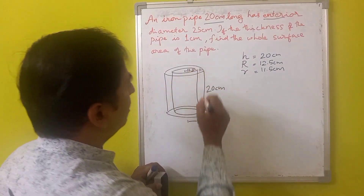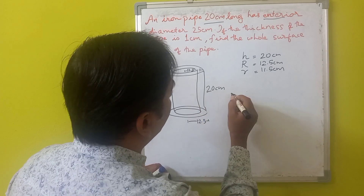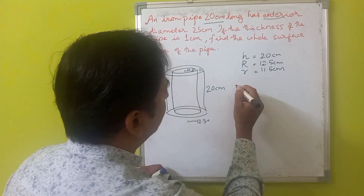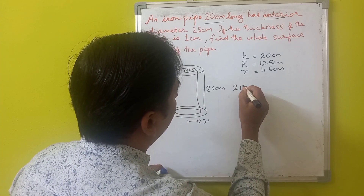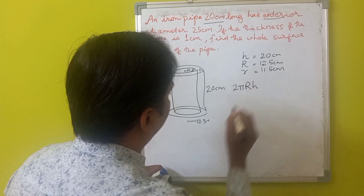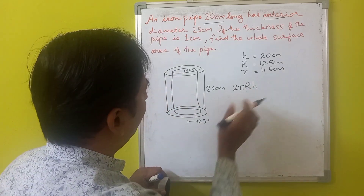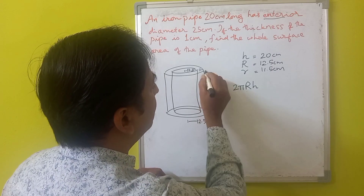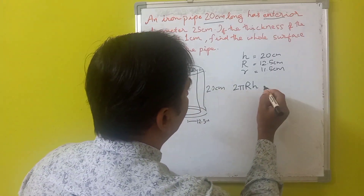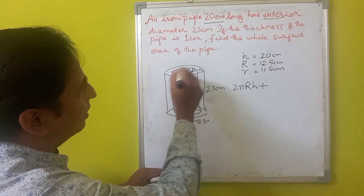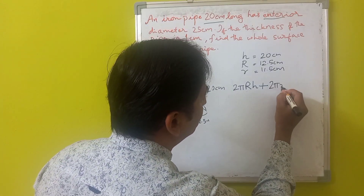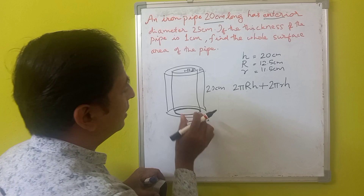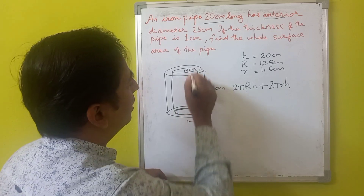The total surface area of this cylindrical pipe will include the external curved surface area, which is 2πRh — the perimeter of the external circle multiplied by the height — plus the internal curved surface area, which is 2πrh — the perimeter of the internal circle multiplied by the height.